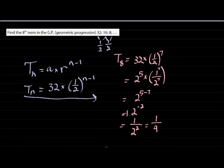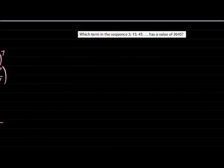Let's look at a more difficult example. Which term in the sequence has the value of 3645? Now we know this is a geometric sequence, but let's verify. We take 15 divided by 5 is 3, 45 divided by 15 is 3. There is a constant ratio.